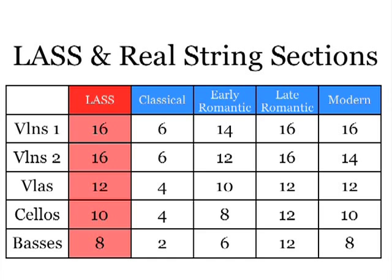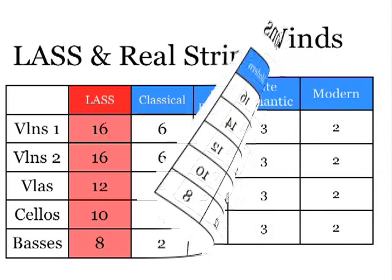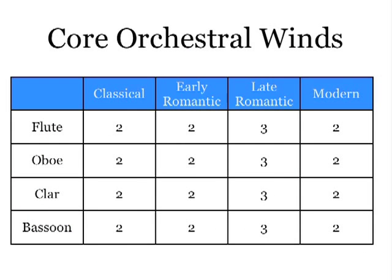So with any of these string ensembles, here's the question: how many woodwinds can be used, whether live or in a MIDI mock-up? Here are the core instruments for the woodwind section: flutes, oboes, clarinets, and bassoons. Notice that composers used a pair of instruments until Wagner and Mahler, who wrote for three.